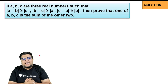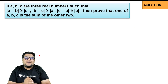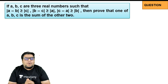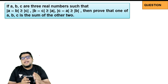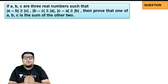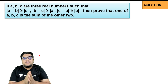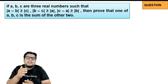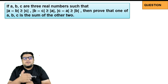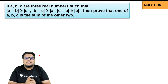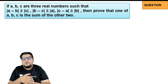The question says: mod of (a minus b) is greater than or equal to mod c; mod of (b minus c) is greater than or equal to mod a; and mod of (c minus a) is greater than or equal to mod b. Then prove that one of a, b, c is the sum of the other two.